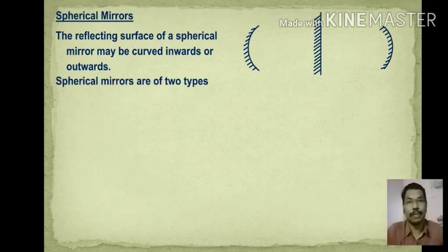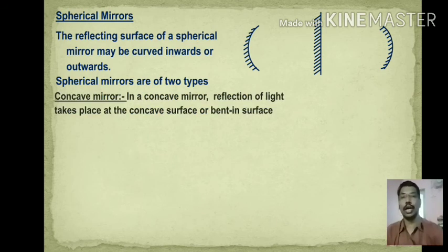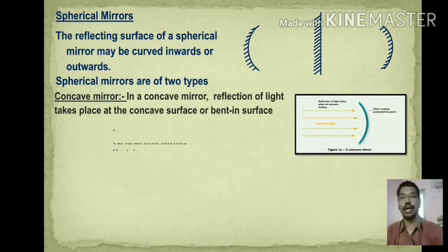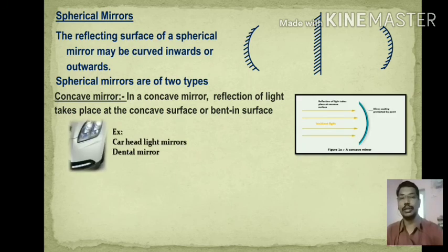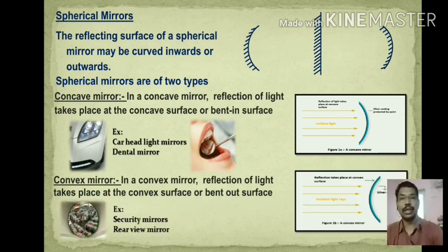The reflecting surface of a spherical mirror may be curved inwards or outwards. Spherical mirrors are of two types: concave mirror and convex mirror.